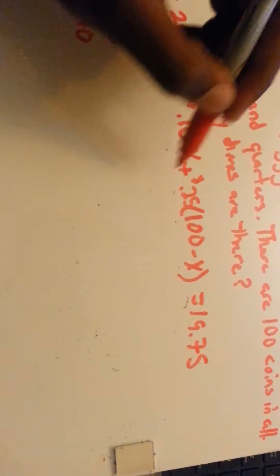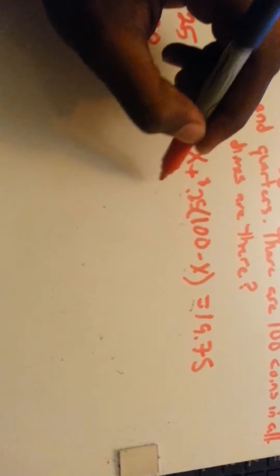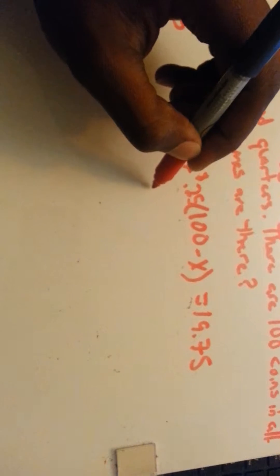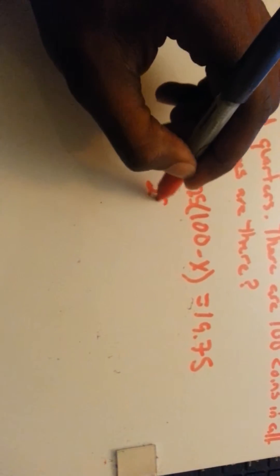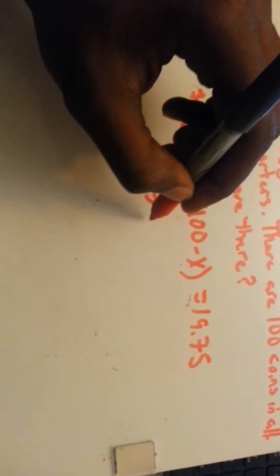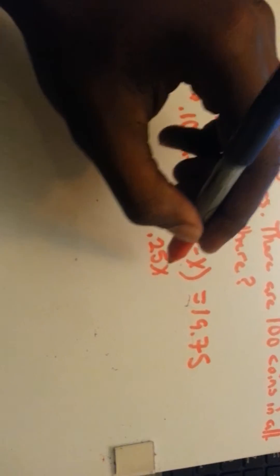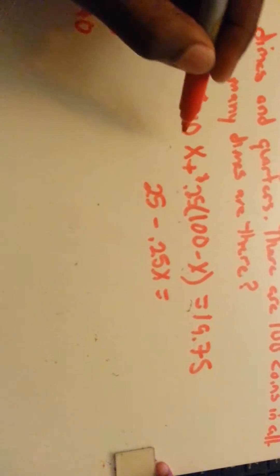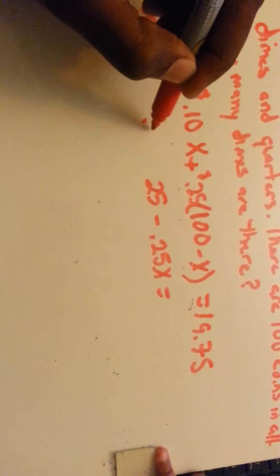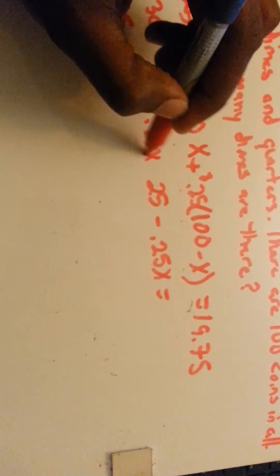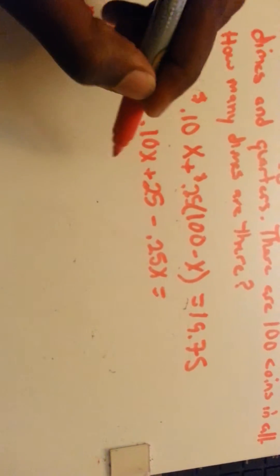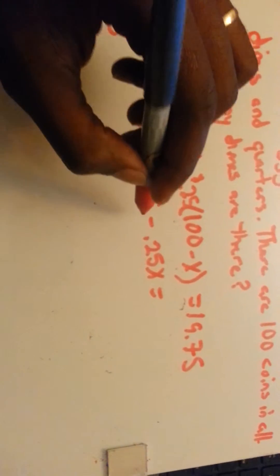So to solve for this, we multiply through the parentheses here. 0.25 times 100 is 25 minus 0.25X equals, and then we have 0.10X. So 0.10X plus 25 minus 0.25X equals 19.75.